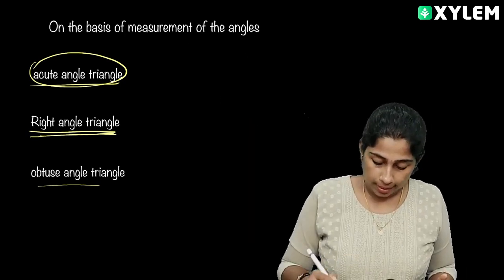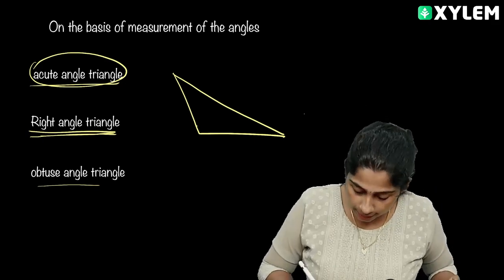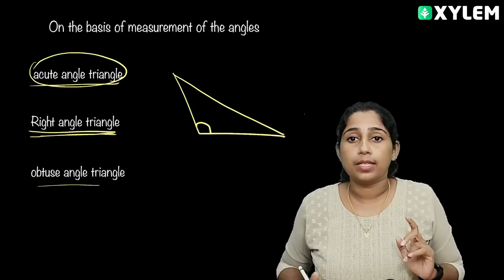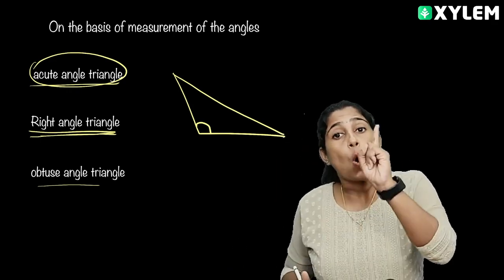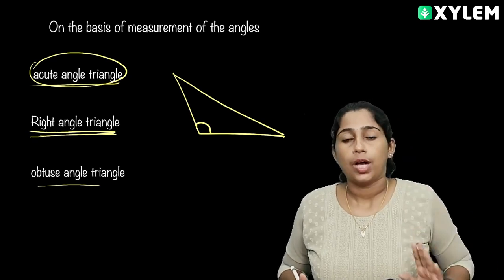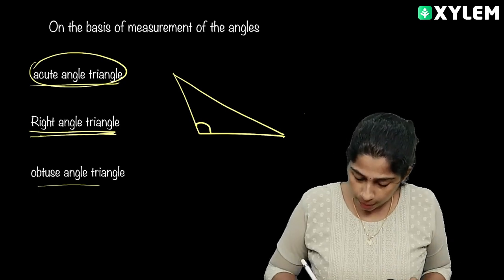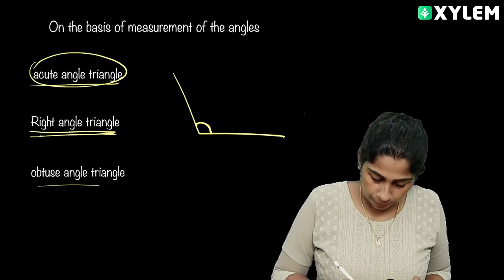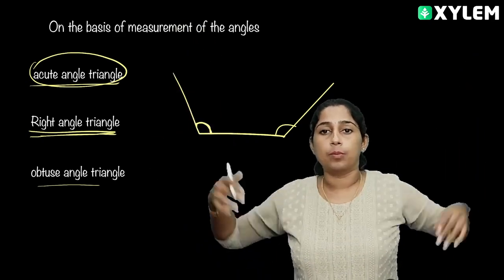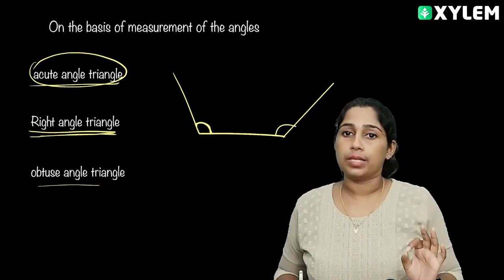Now, this is an obtuse triangle. If I look at this triangle, one angle is greater than 90 degrees — greater than 180? No. One angle is greater than 90 degrees — that is obtuse. So if one angle is greater than 90 degrees, we call it an obtuse triangle.